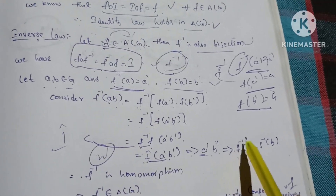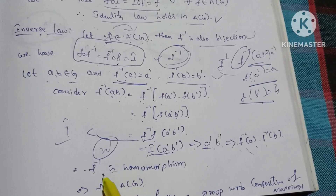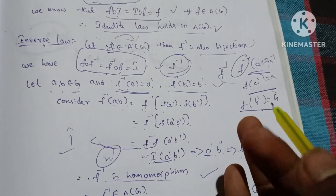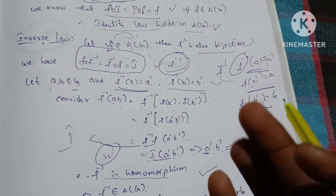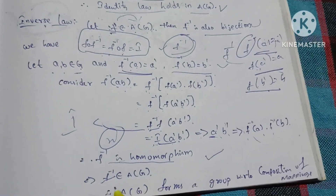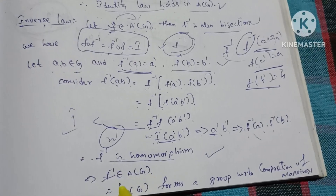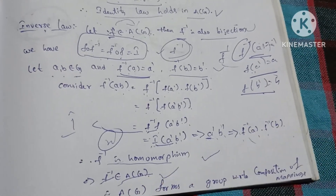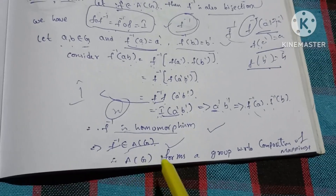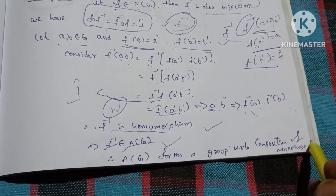Therefore F⁻¹(a·b) = F⁻¹(a)·F⁻¹(b). Therefore F⁻¹ is a homomorphism; it is one-one, onto, and a homomorphism. Therefore F⁻¹ is an automorphism, and F⁻¹ belongs to A(G). So all four laws hold in A(G). Therefore A(G) forms a group with respect to the composition of mapping.